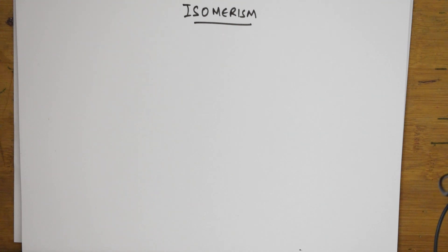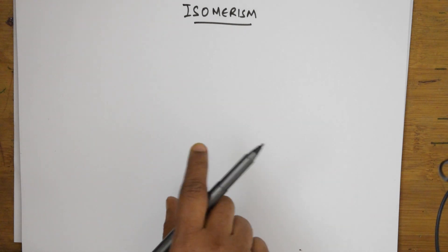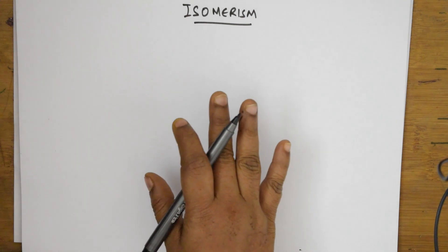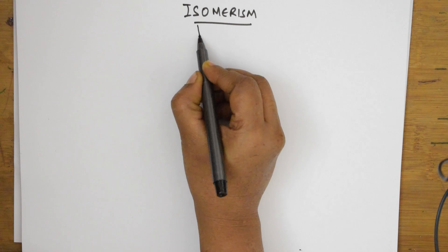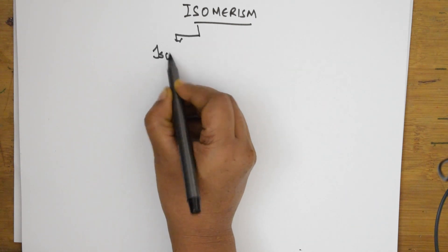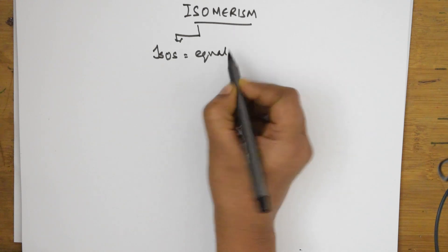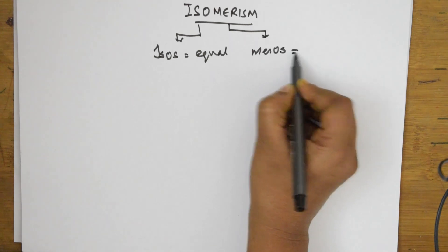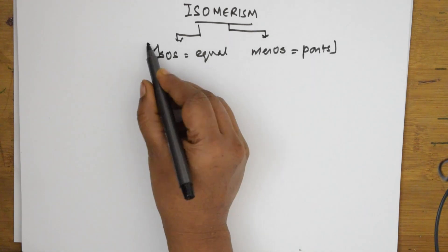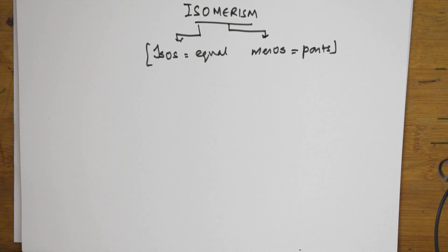I've come to GOC 1 and I'll be gradually doing all the concepts. When I speak about isomerism — what is isomerism? It is the study of organic compounds where 'isos' means equal and 'meros' means parts. So isomerism is the study of compounds with equal parts.